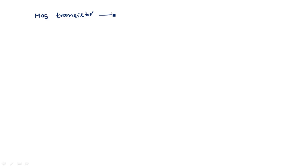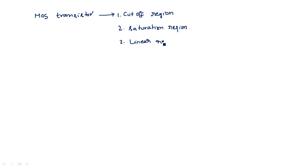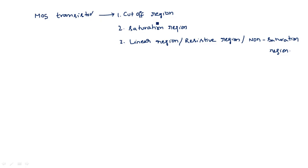For a bipolar junction transistor, the three regions are cutoff region, active region, and saturation region. But for the MOS transistor, there are three different regions: one is cutoff region, another one is saturation region, and the third one is linear region — also called resistive region or non-saturation region. These are the three different regions that a MOS transistor can be operated in, depending upon the application of voltage.